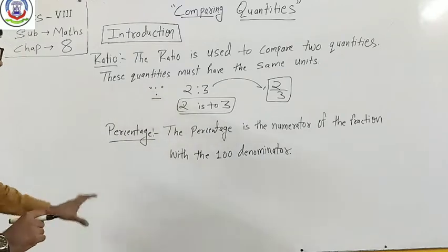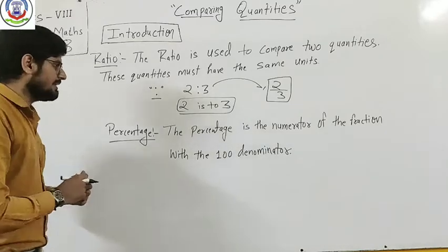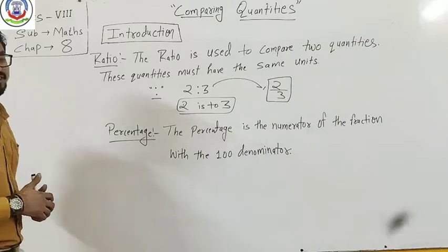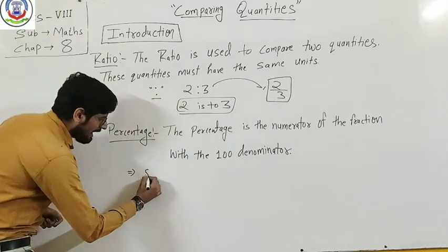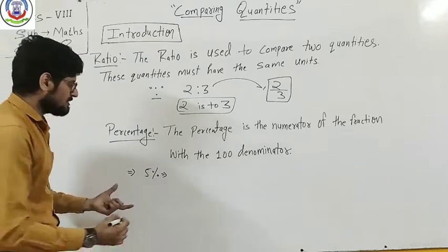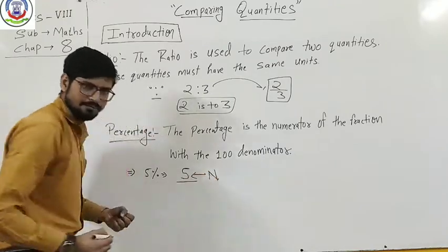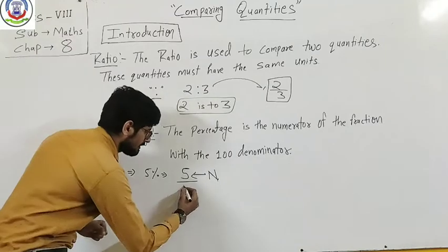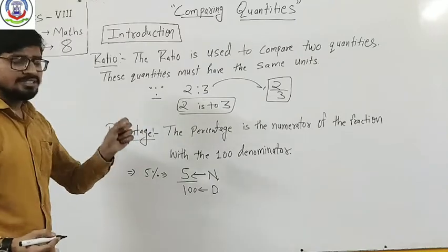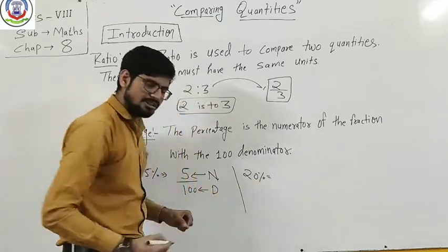The second thing in comparing quantities is percentage. Percentage is another way which we compare. Percentage is the numerator of a fraction with 100 as the denominator. What does it mean? It means 5% is 5 by 100, where 5 is the numerator with always 100 as the denominator. Similarly, 20% is 20 by 100.